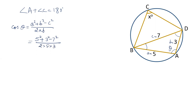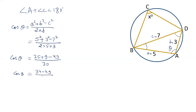2 × 5 × 3 is 30. So cos θ = (25 + 9 − 49) / 30. That is (34 − 49) / 30, which equals −15/30, that is −1/2.